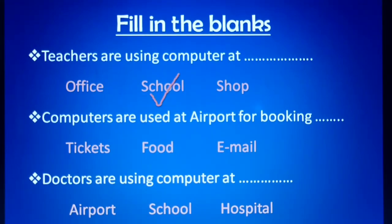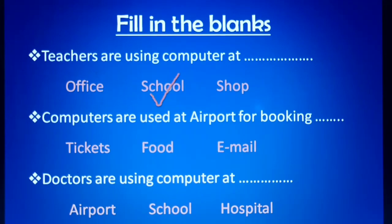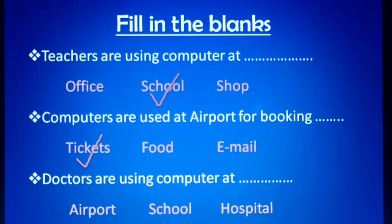Second question: computers are used at airports for booking blank. Options are tickets, food, and email. We know we can use computers at airports and railway stations for booking tickets. So the correct answer is option A: tickets.